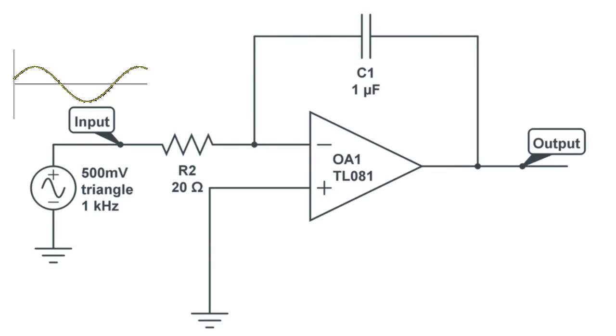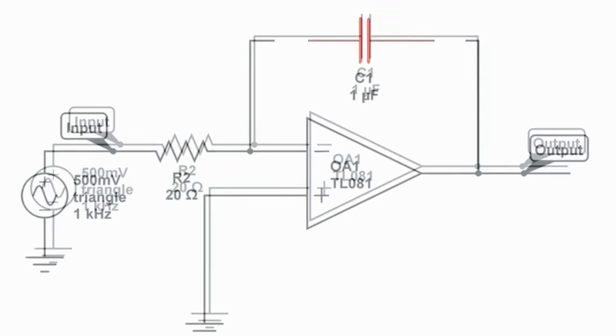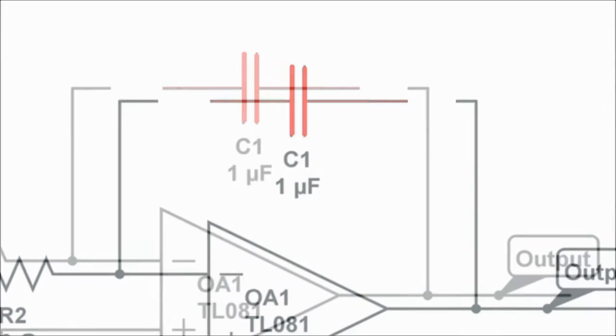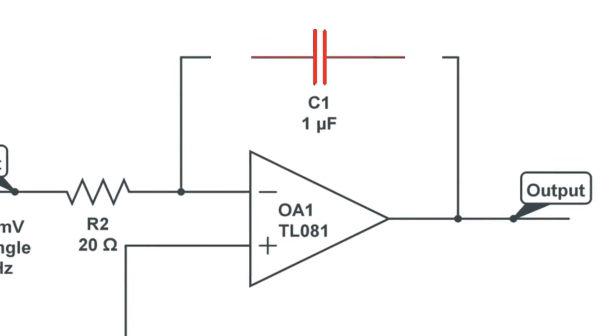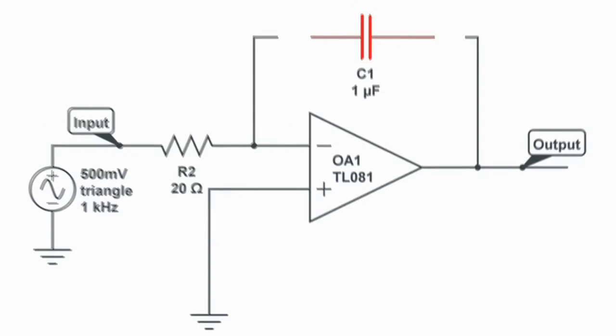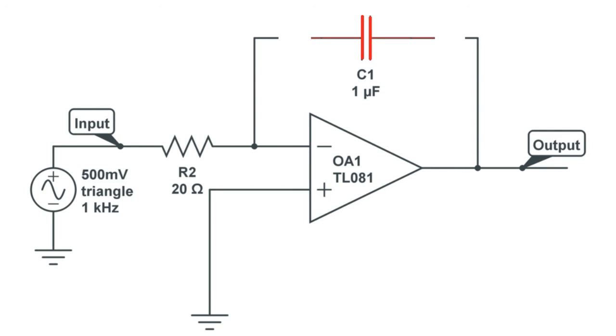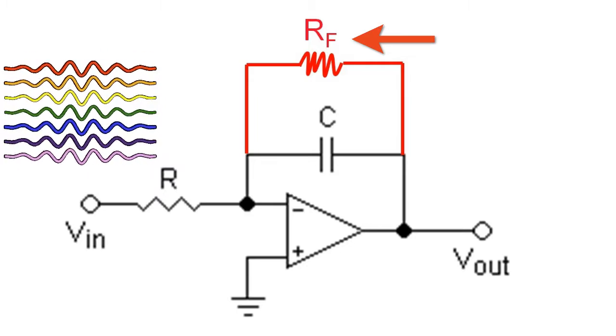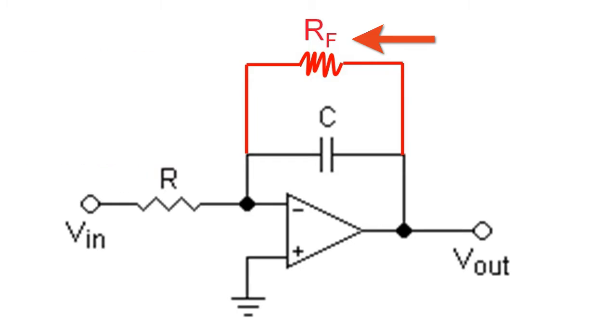Be aware that a resistor is often connected in parallel to the capacitor for saturation issues. Indeed, if the input signal is a very low frequency sine wave, the capacitor acts like an open circuit and blocks feedback voltage. The amplifier is then like a normal open loop amplifier that has very high open loop gain, and the amplifier is saturated. Thanks to a resistor in parallel of the capacitor, the circuit behaves like an inverting amplifier with a low frequency, and saturation is avoided.